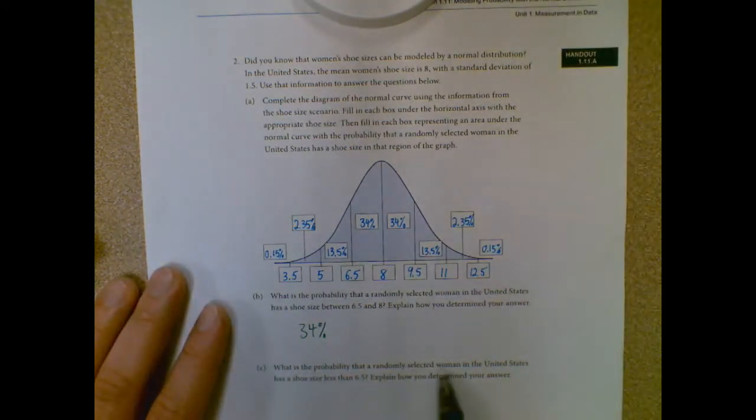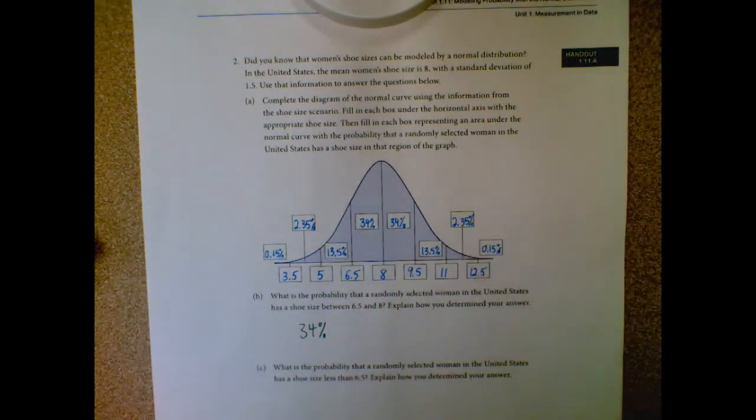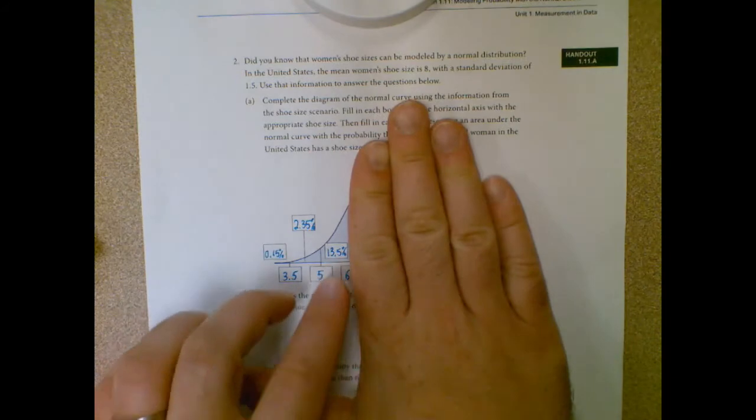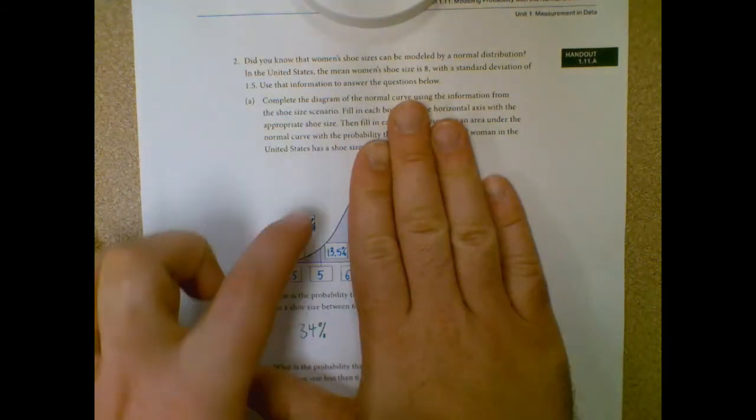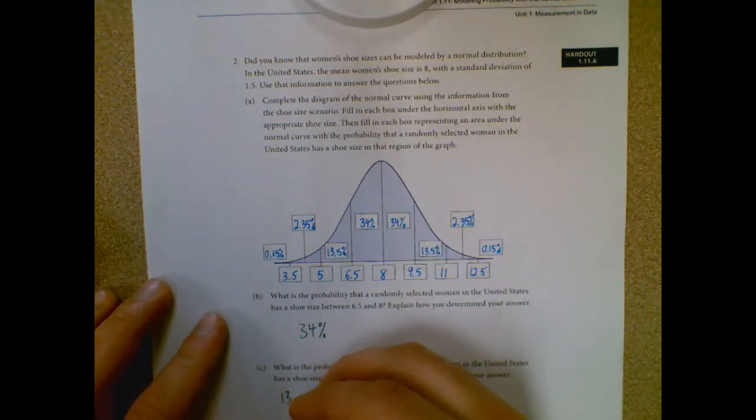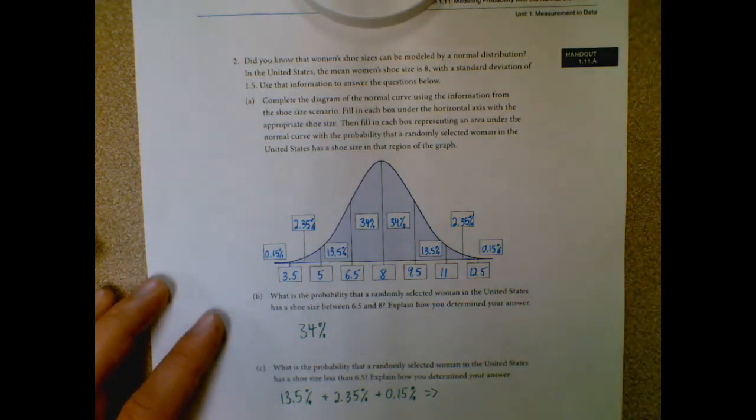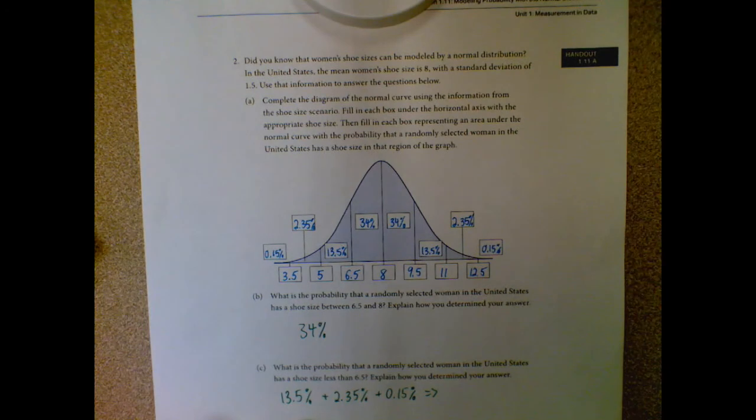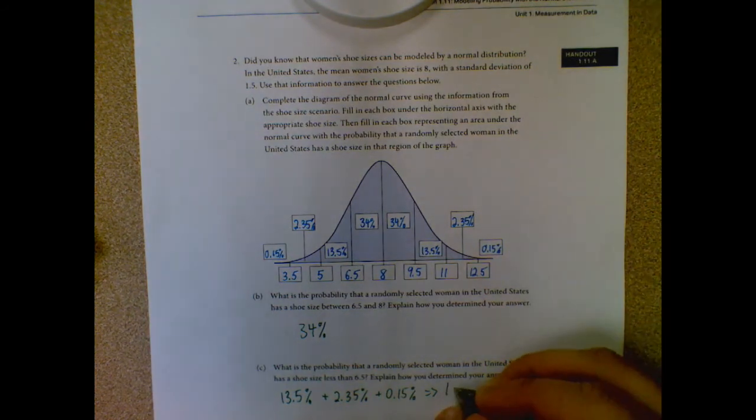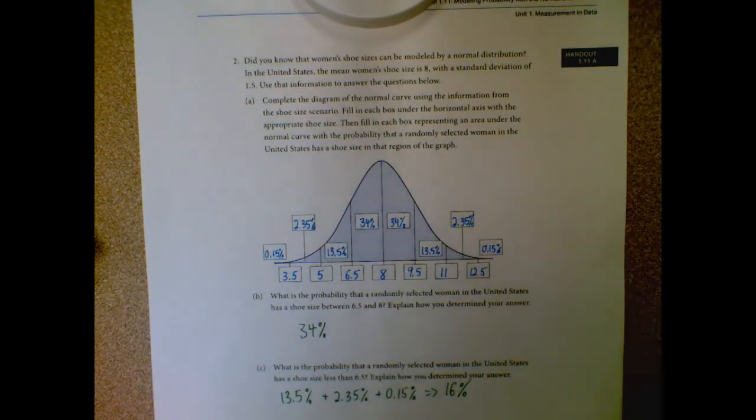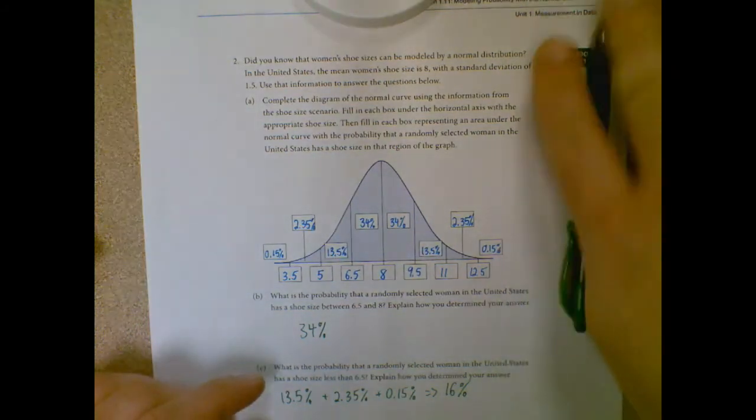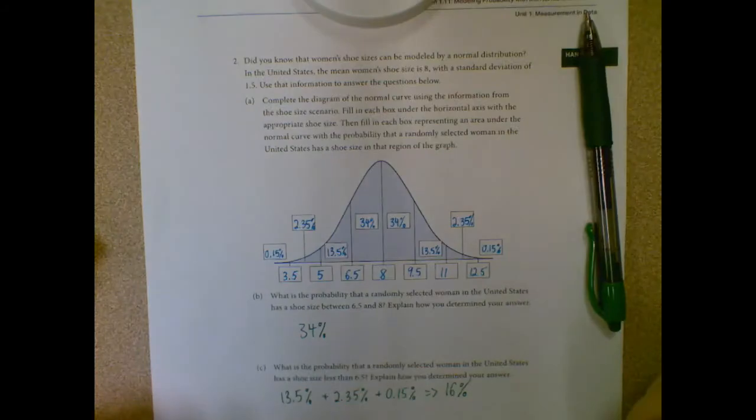Moving down. What is the probability that a randomly selected woman in the United States is a shoe size less than 6.5%? So in this case, I'm not looking for a specific range per se as much as just less than 6.5%. So I'm ignoring everything on the larger side and just adding up all my other numbers. So I have 13.5% plus 2.35% plus 0.15%. And that'll give me my total probability. So 13.5 plus 2.35 plus 0.15 gives me an even 16%. That one comes out very nicely.